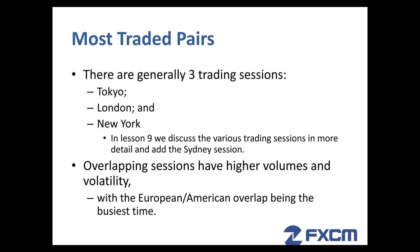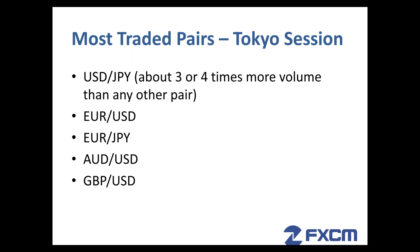The Tokyo session has a particular characteristic in that it is the US dollar/Japanese yen that is the most traded currency pair — about three or four times more volume in terms of trade than any other pair. Then comes the euro/US dollar, then the euro/Japanese yen, then Aussie/US dollar, then pound/US dollar.